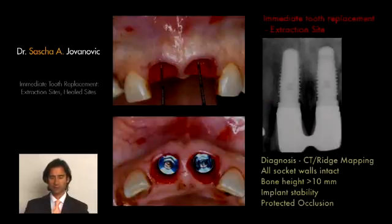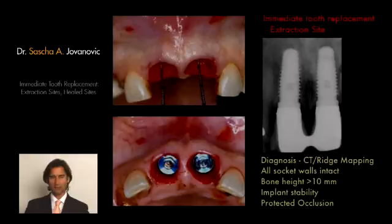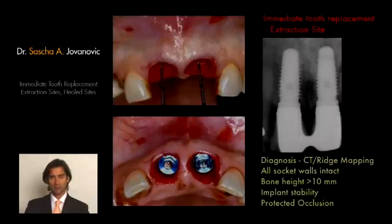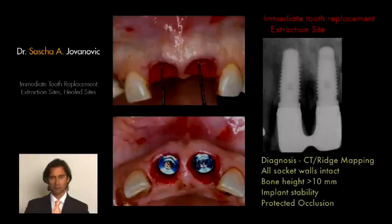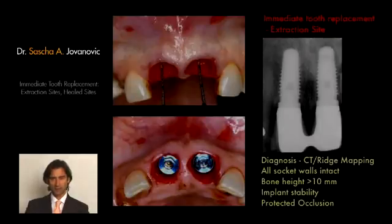Let's look first at the extraction site. One of the most important areas is really doing the right diagnosis. Many cases today will utilize the combination of either clinical ridge mapping — probing the site for available bone surrounding the socket wall — or a dental CT scan to find the available bone quantity and quality for implant placement. Most importantly, all the socket walls need to be intact, specifically the buccal bone, because we are dealing with preserving the buccal bone plate to preserve the gingival margin, as many of these are anterior maxillary cases, and also preserving the interproximal gingival papilla.